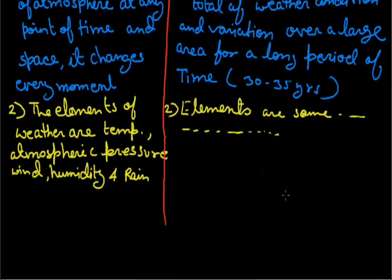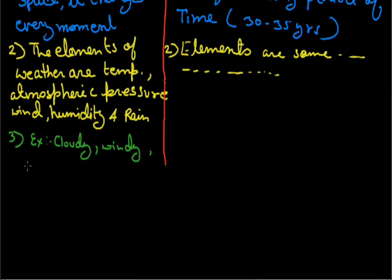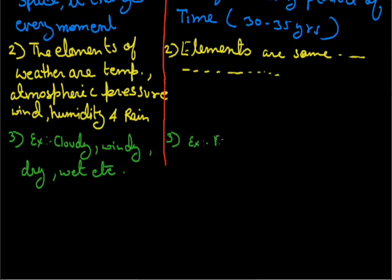Taking examples: in weather, examples are like today the weather is very cloudy, windy, dry, or wet. While in climate, examples are like the climate of India is monsoon, equatorial, temperate, frigid, etc.